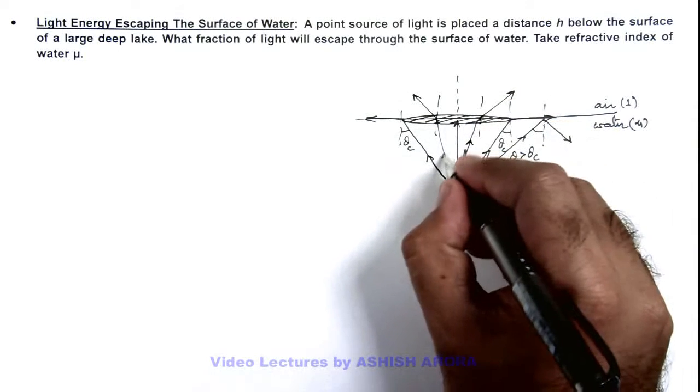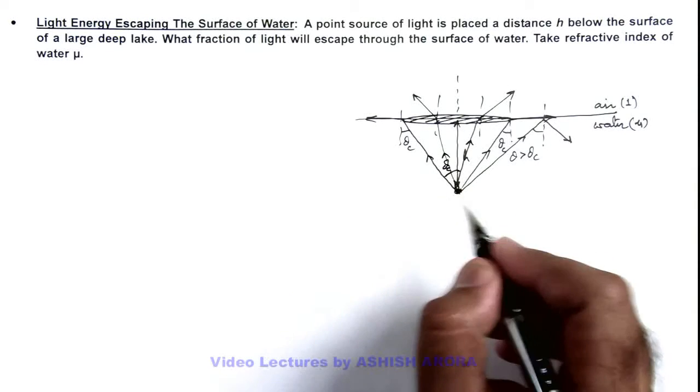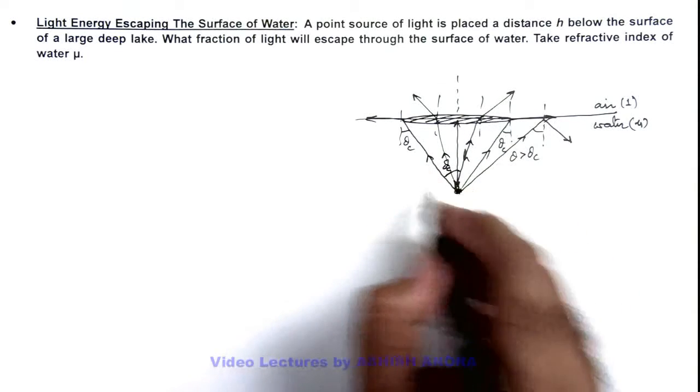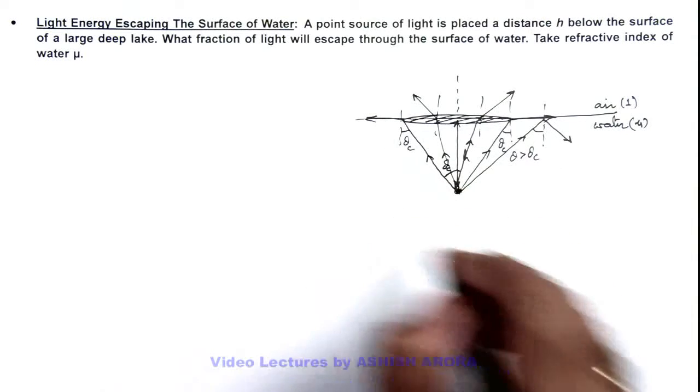That means the light energy of this source which is there within this cone of half angle theta c will escape, and rest of the light energy due to TIR will get back into the water only.